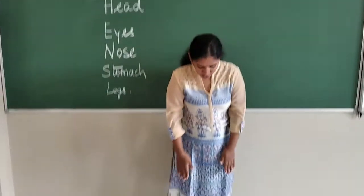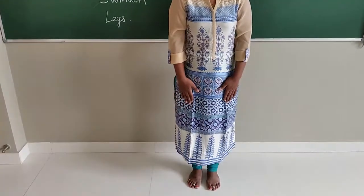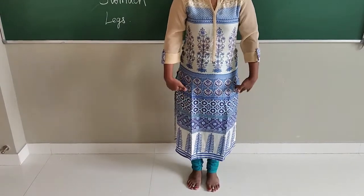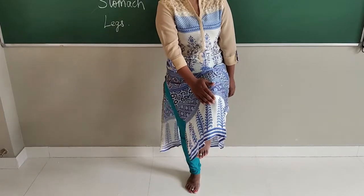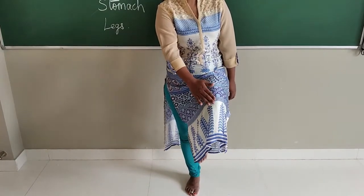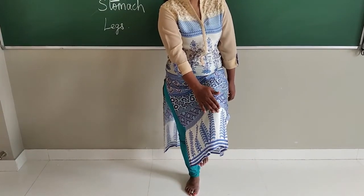And this is our chest, stomach and these two are our legs. The upper part of the leg is called as thighs and this portion is called as knees. I repeat this is called as knees.